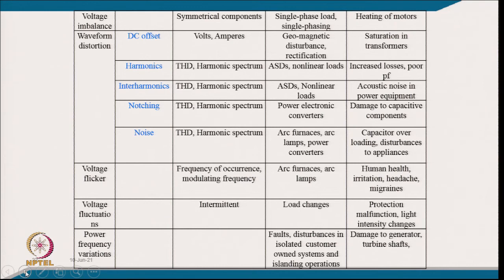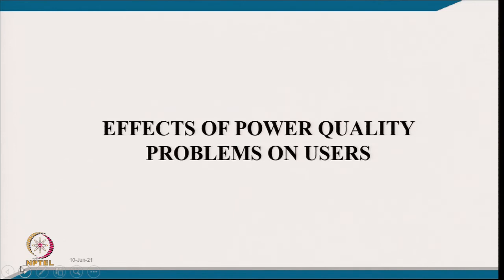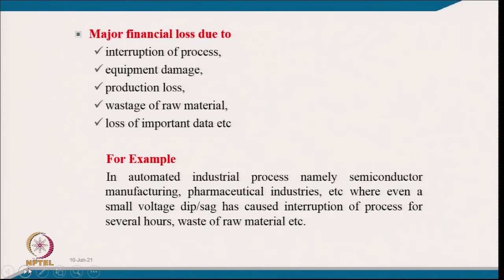Regarding effects of power quality problems on users: one major effect is financial loss due to interruption of process. For example, in a semiconductor manufacturing industry, even a small interruption affects manufacturing equipment and the whole batch is lost.